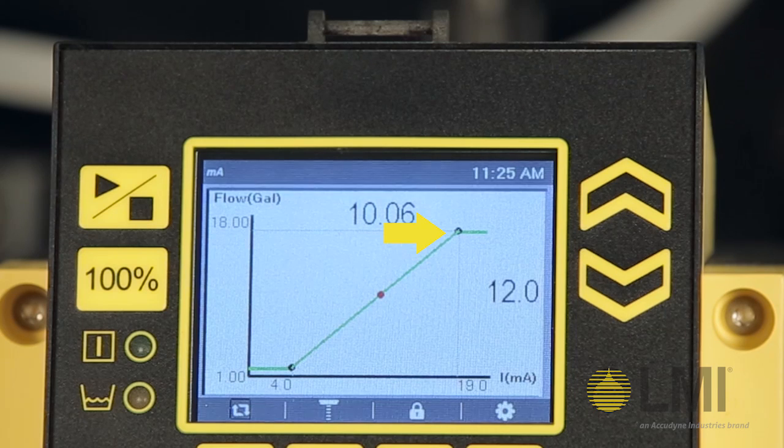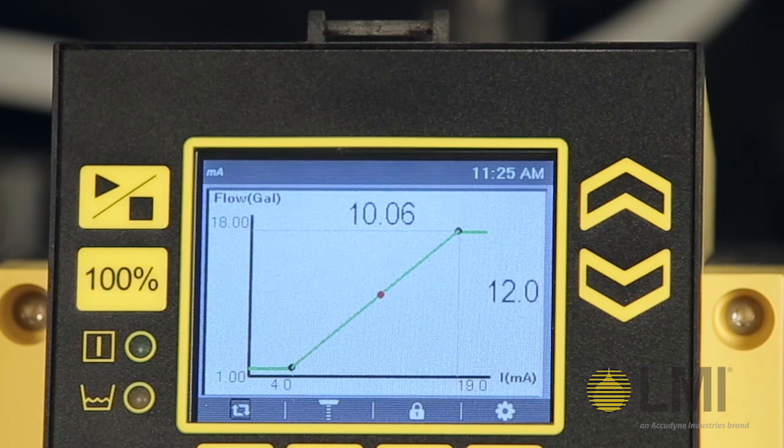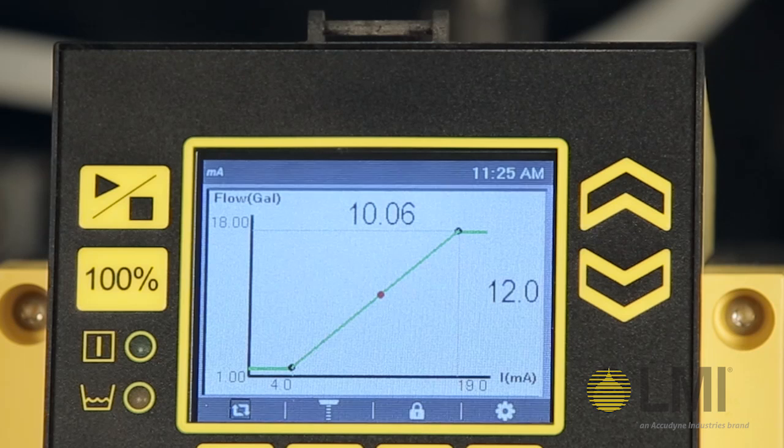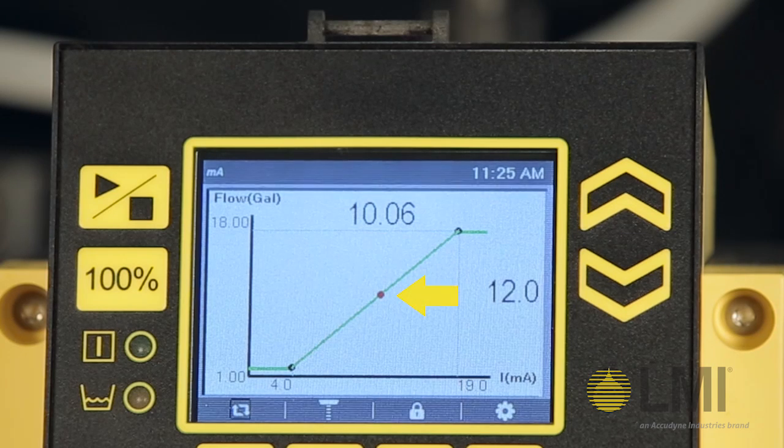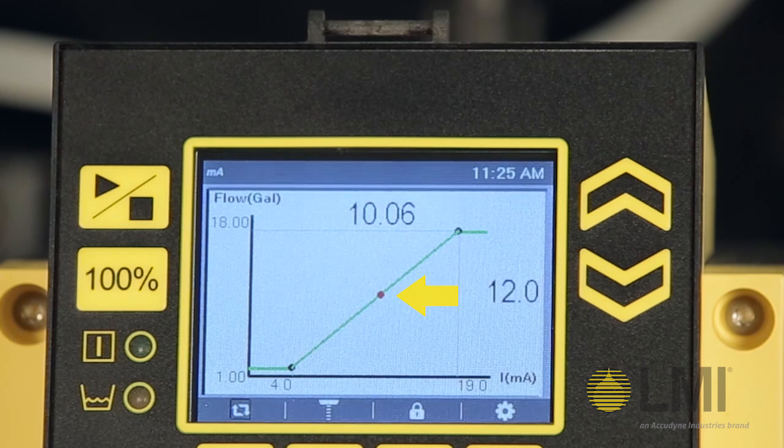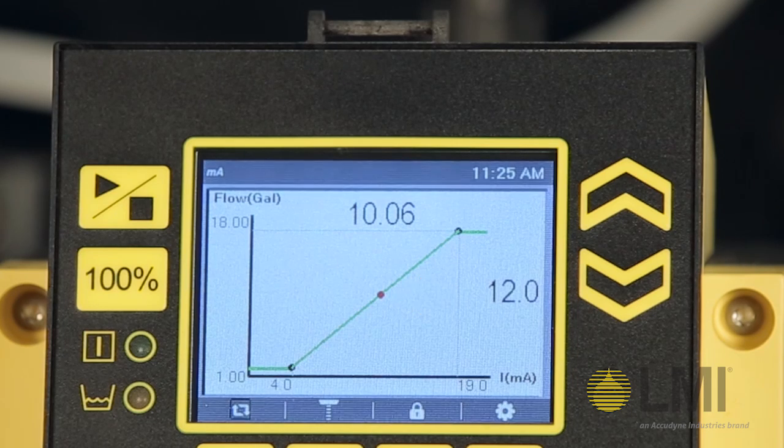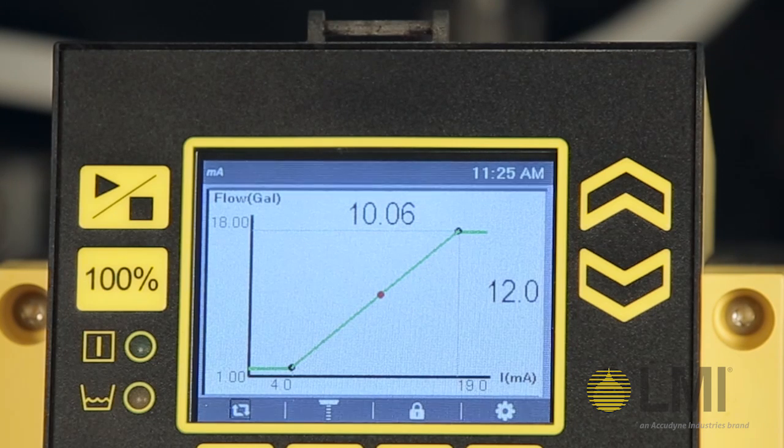At any given input current on the x-axis, you can plot and see what your flow rate will be for the output of the pump. The red dot indicates our current rating, so the pump is at a 12 milliamp signal, which corresponds to a 10 gallons per hour flow rate.